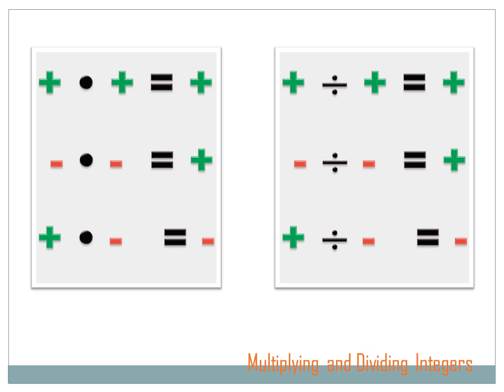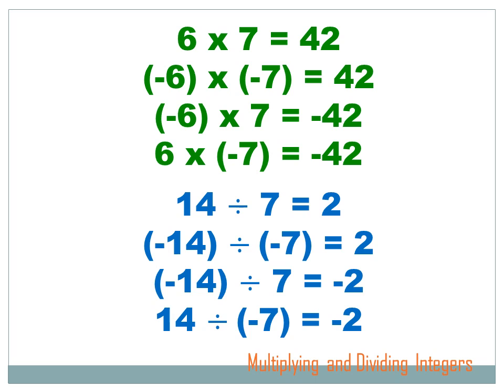So, if the signs of the two numbers you're working with are the same, they're both positive or they're both negative, then the answer is going to be positive. But if they're different, if the signs of the two numbers you're working with are different, one's positive and the other is negative, then the answer is going to be negative. Positive 6 times positive 7 gives us a positive 42 result. Negative 6 times negative 7 also gives us a positive result. But if one of the signs is different, then you're going to get a negative answer.